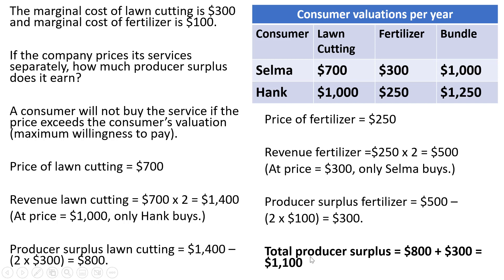Taken together, total producer surplus is going to be the $800 from lawn cutting plus the $300 from fertilizer, or $1,100.